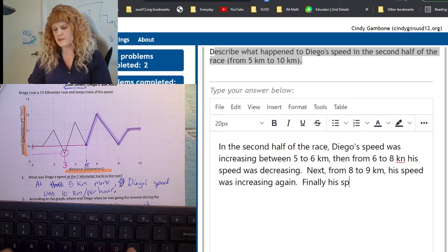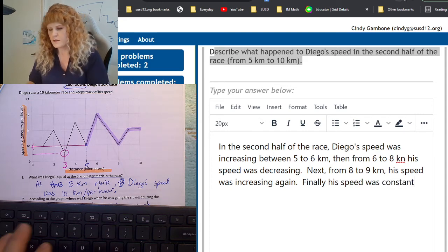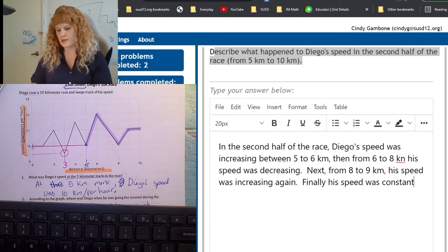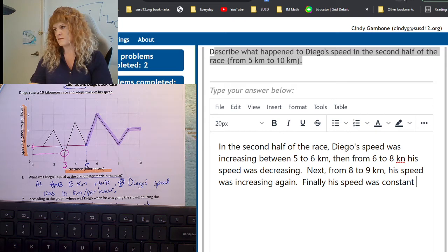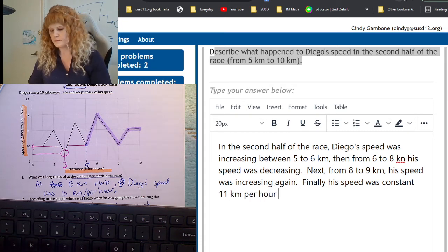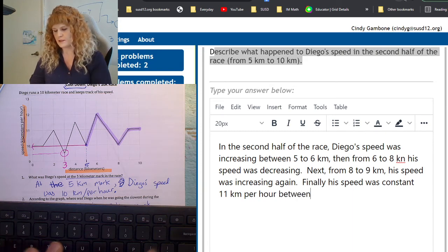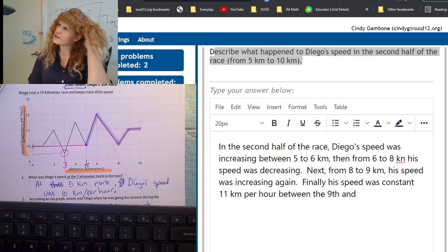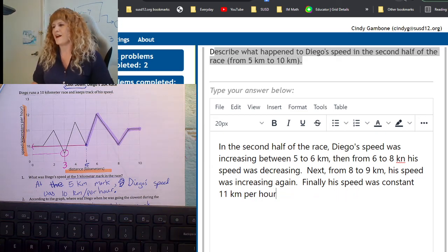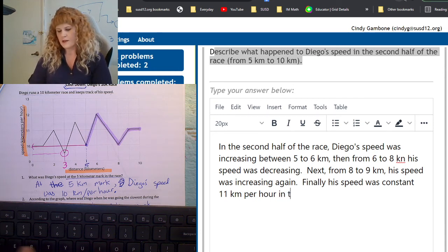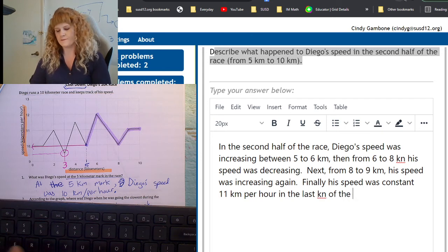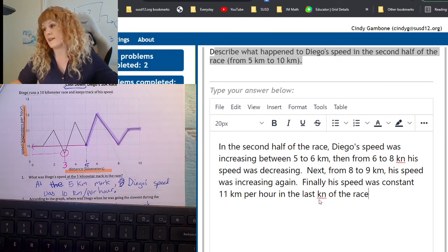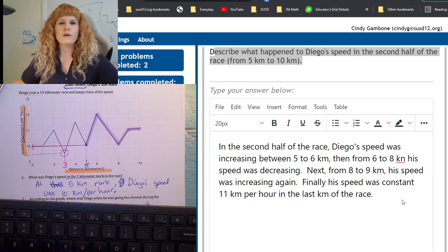Finally, his speed was constant 11 kilometers per hour in the last kilometer of the race. That would be the 10th kilometer, but it's between nine and 10. I'll just say the last kilometer.